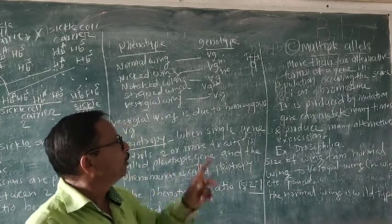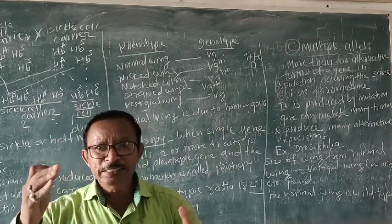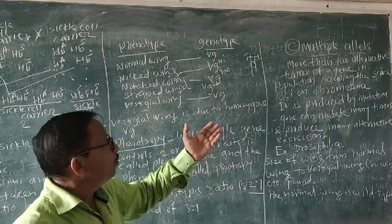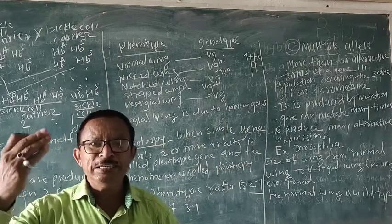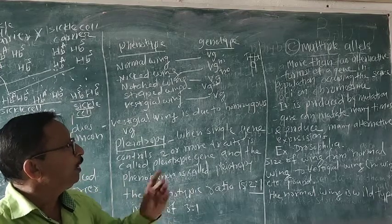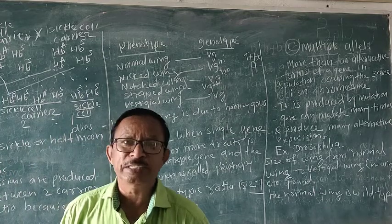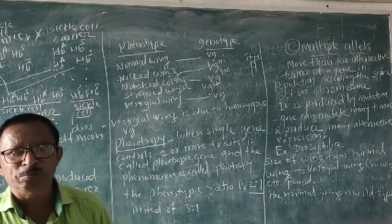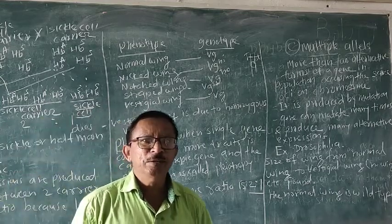It is called as multiple alleles. Multiple means many alleles. These are more segments of DNA present on the loci. But in the population they are more than two types. Multiple alleles are formed due to mutation. Mutation means a sudden change in the gene or chromosome.